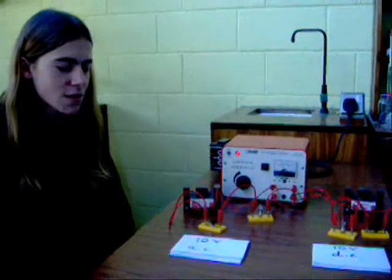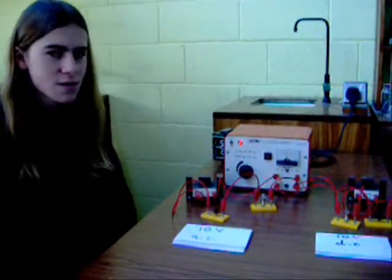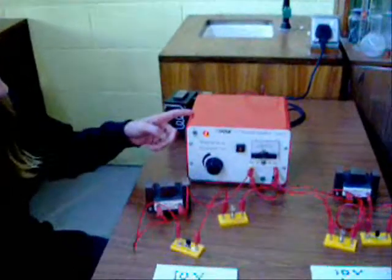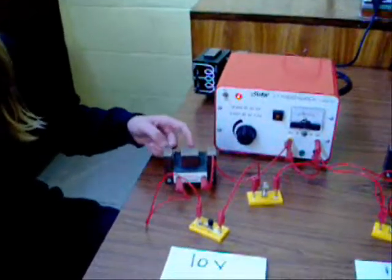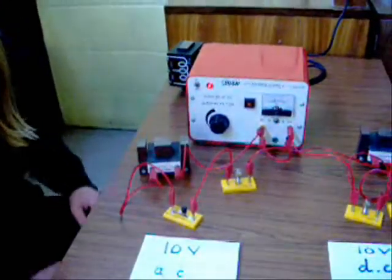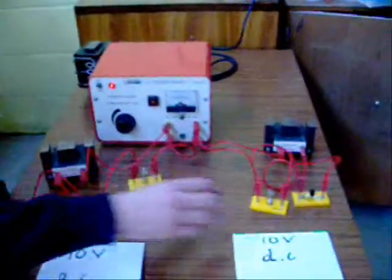The aim is to show that a coil has a higher resistance to AC than it does to DC. The apparatus is a power supply, a coil placed on a soft iron core, a switch, a lamp, and this is connected to AC and this is connected to DC.